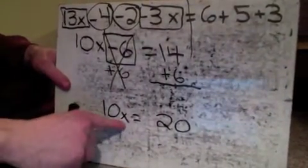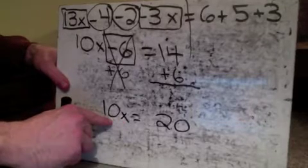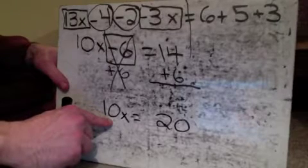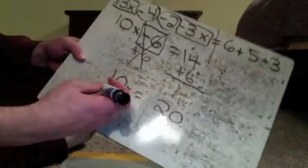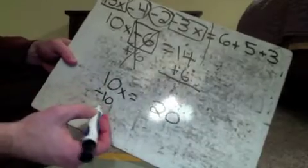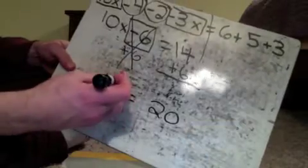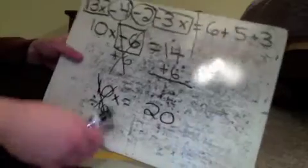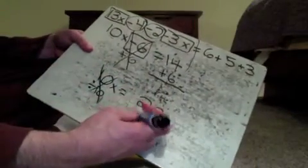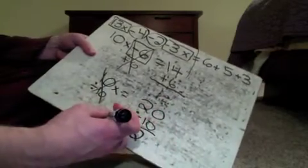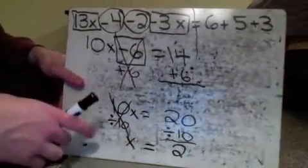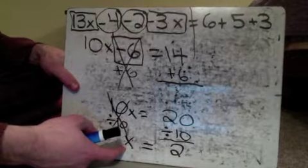Now I'm not quite done yet, because I still have 10x equals 20. That's a problem because I still don't have x by itself — I've got it attached to times 10, which is not what I want. So we have to do the opposite. The opposite of times 10 would be divided by 10. Times 10 and divide by 10 are opposites, so they cancel out, leaving me with just x. I need to divide by 10 on the other side as well. 20 divided by 10 is 2, so I'm left with x equals 2. I've got x by itself on a side, which is exactly what we were looking for.